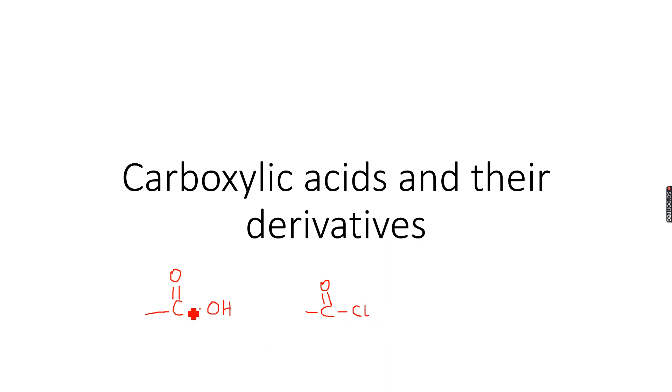For example, if I have CH3CH2, this is called propanoic acid. Prop because we have three carbon atoms in the main chain, and it's an acid because of the carboxylic acid group.